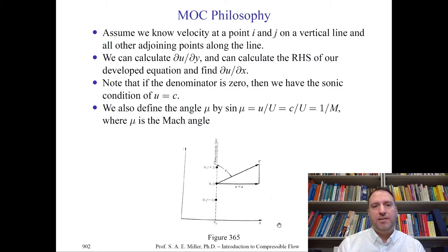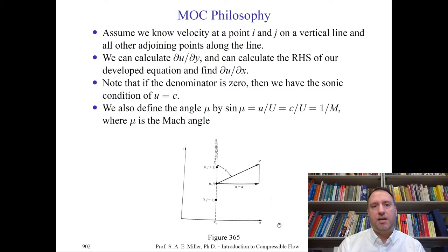Note that in some cases, it could be possible that the denominator of the method would be zero. In this case, we would have what we call a sonic condition — that is, u equals c. Therefore, we cannot technically be crossing sonic conditions to go to subsonic flow. Our method of characteristics will only be valid mathematically and physically for flows that are supersonic.